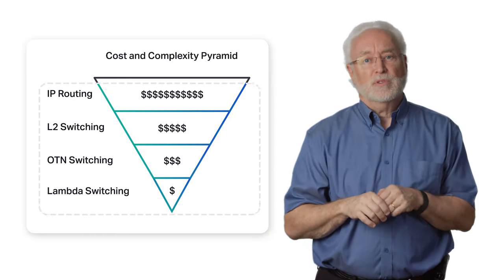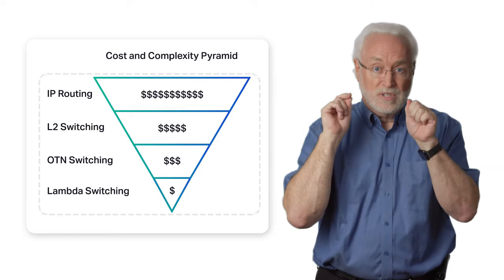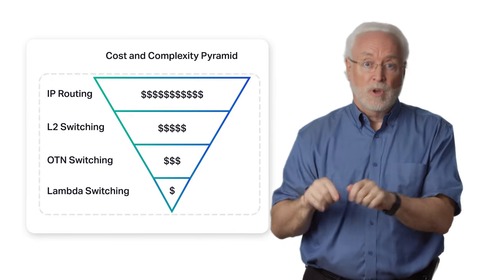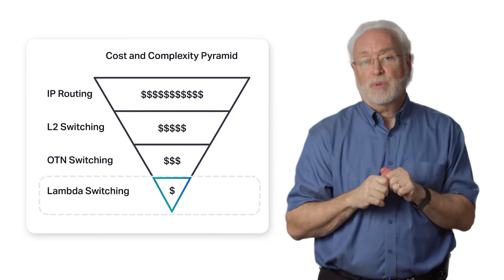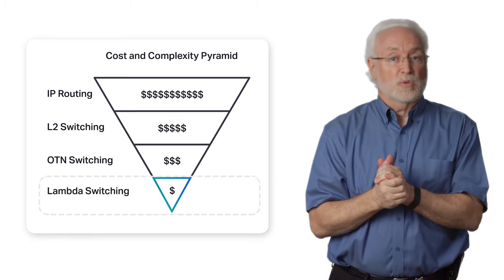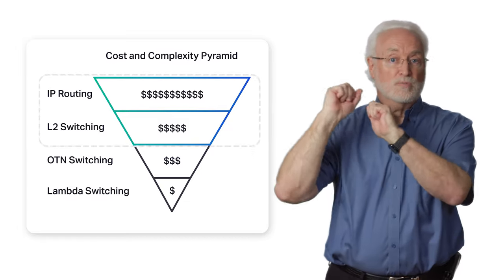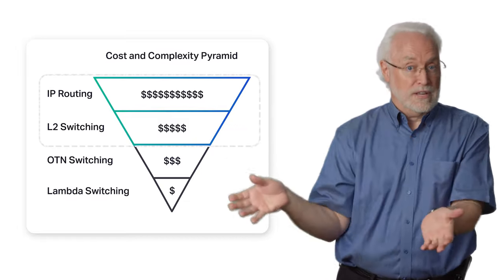You still need the different layers to build a complete network infrastructure, but you want to optimize how you use each one of them. You want to keep traffic at the lowest possible layer of your network as long as you can. This is important because whenever higher layers touch the traffic, the additional processing generalizes cost, uses more energy, and often adds additional latency.